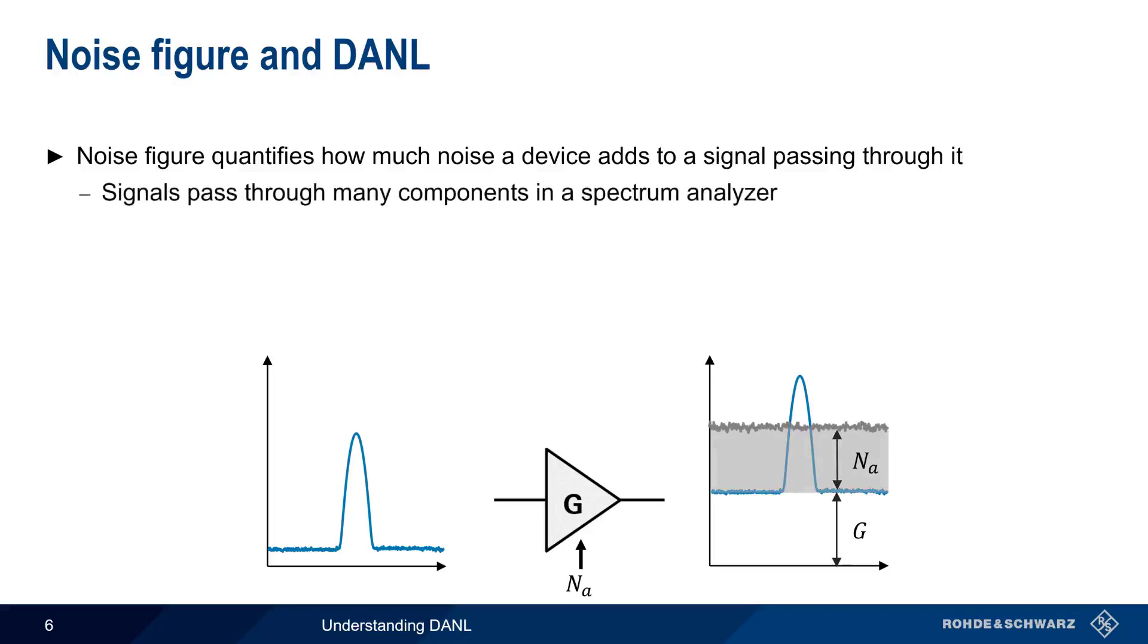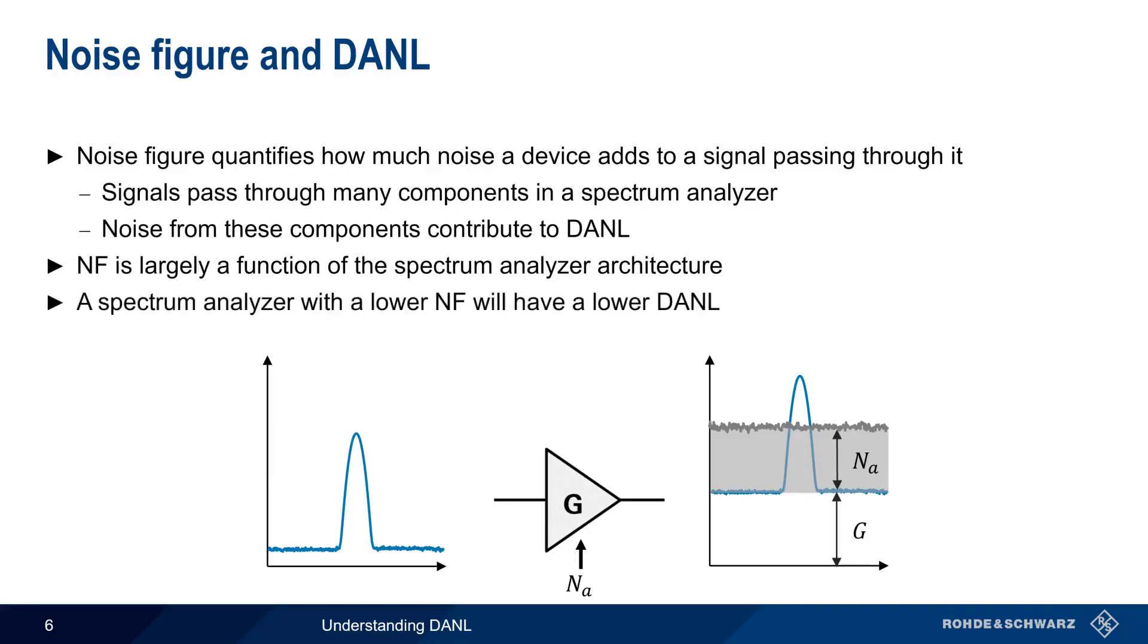Spectrum analyzers contain numerous mixers, amplifiers, and other components that will add noise to the measured signal, and the noise from these components contributes to the analyzer's overall DANL. Noise figure is largely a function of the spectrum analyzer's architecture, and an analyzer with lower noise figure will typically have a lower DANL.